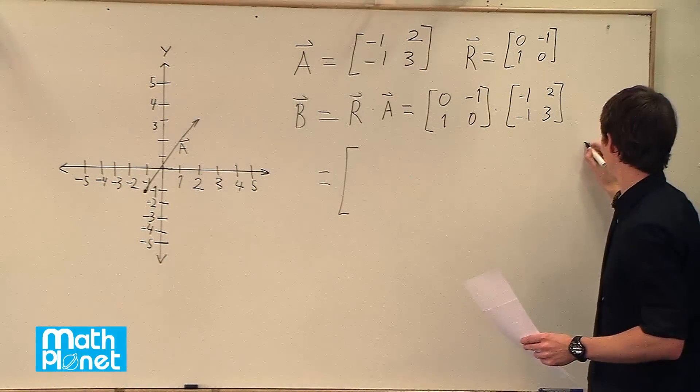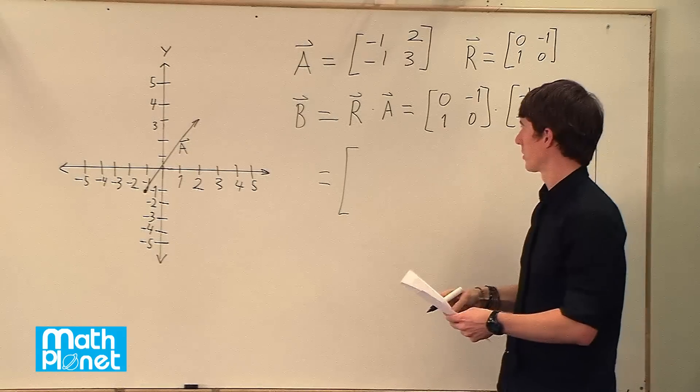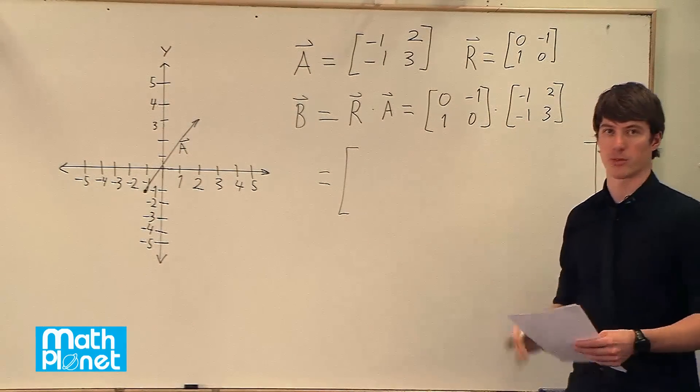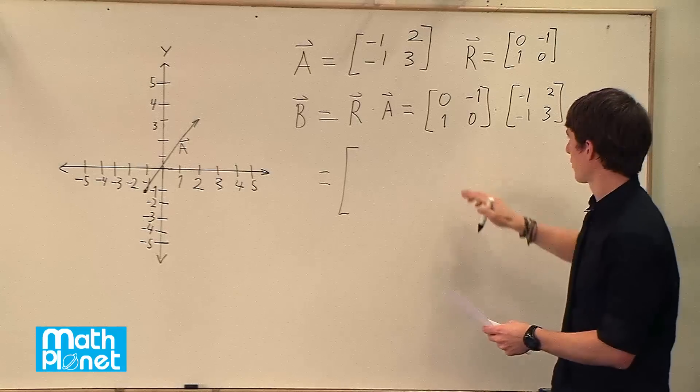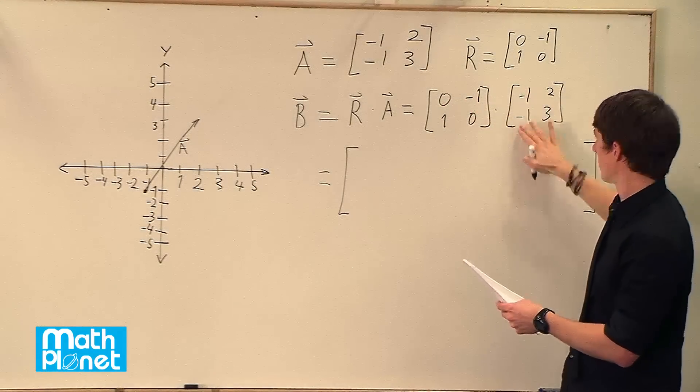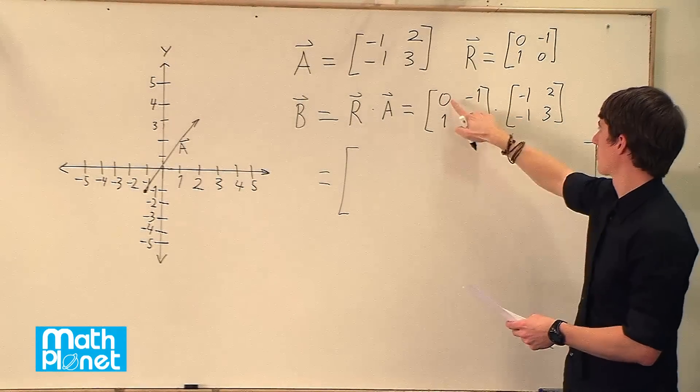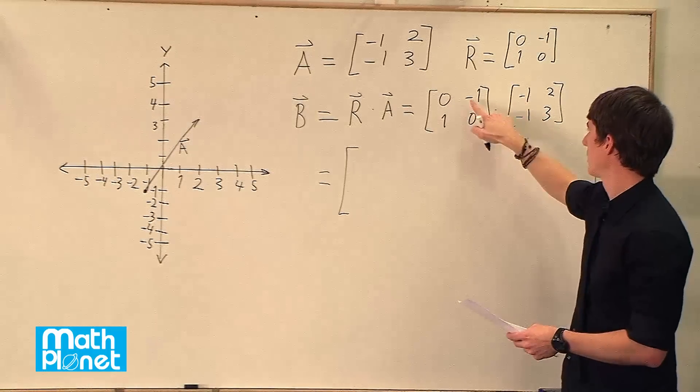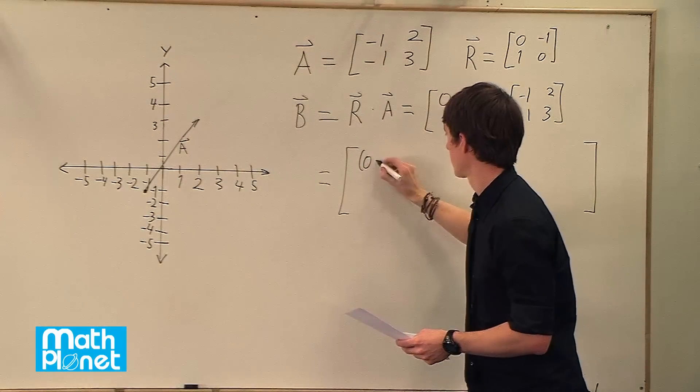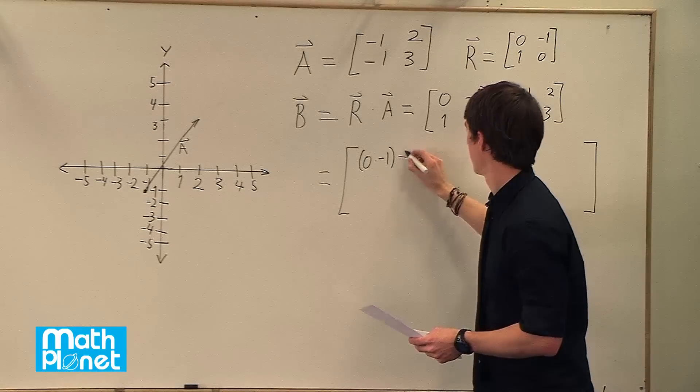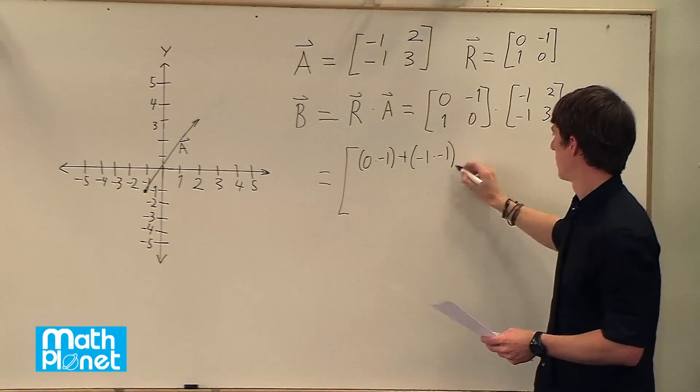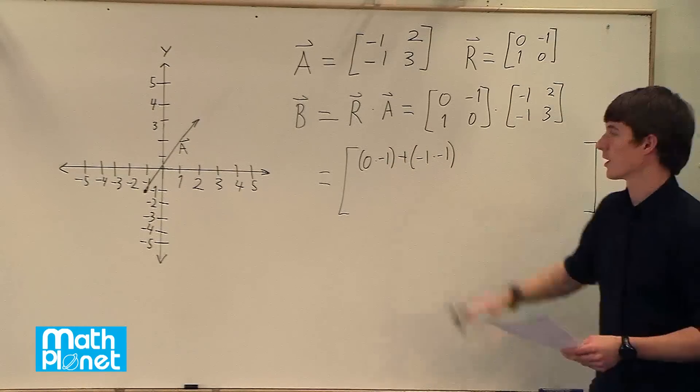So when we multiply that out, we need to remember the order that we do this in. Each point is going to be row column—row first and then column. So the first one is 0, negative 1, times this column, so row column. So 0 times negative 1 plus negative 1 times negative 1. So that's this coordinate here.